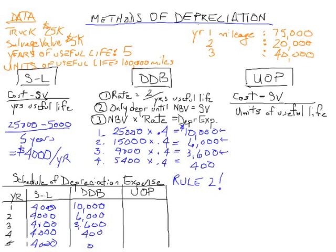What we do here is the same as the numerator for straight line. We take the cost minus the salvage value. The only one that doesn't subtract salvage value up front is double declining balance. All the other ones do. And we divide by not years of useful life, but units of useful life.